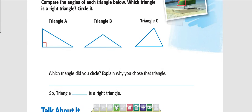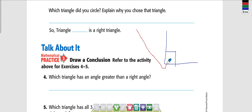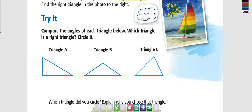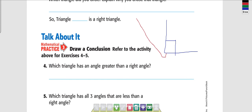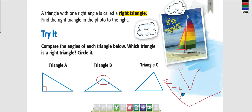Which triangle has an angle that's greater than a right angle? If my right angle is like this, if it's greater it's going to be here. Look at the triangles — which one has an angle that's greater than a right angle? B. It's very wide. That's a wide angle that's greater than a right angle. If it looks like a small V, that's less than a right angle. But if it looks wide open, like an alligator has its mouth wide open, that's an angle greater than a right angle.